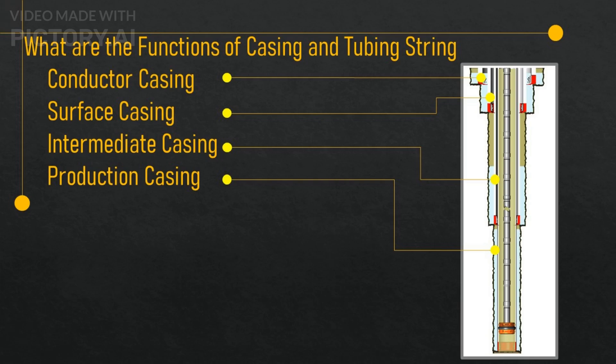Production casing string: this is the fourth and final casing string that is installed in the well, and it is usually cemented inside the intermediate casing string. The production casing string serves as a conduit for the production fluids from the reservoir to the surface, and it also provides support for the tubing string and the completion equipment. The production casing string may have a diameter of 7 to 10 inches (18 to 25 centimeters) and a length of 10,000 to 20,000 feet.